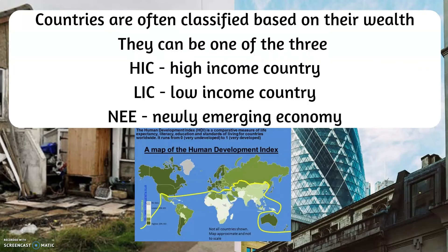Countries are often classified based on their wealth. They can be one of three types – a high income country, a low income country, or a newly emerging economy.